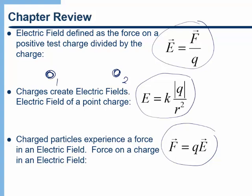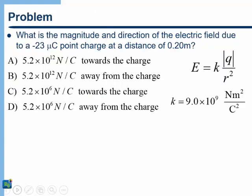Now we'll go through a bunch of multiple choice questions. I suggest you pause the video and try to answer each one yourself before listening to my solution. Here's our first problem: what is the magnitude and direction of the electric field due to a negative 23 microcoulomb point charge at a distance of 0.20 meters?